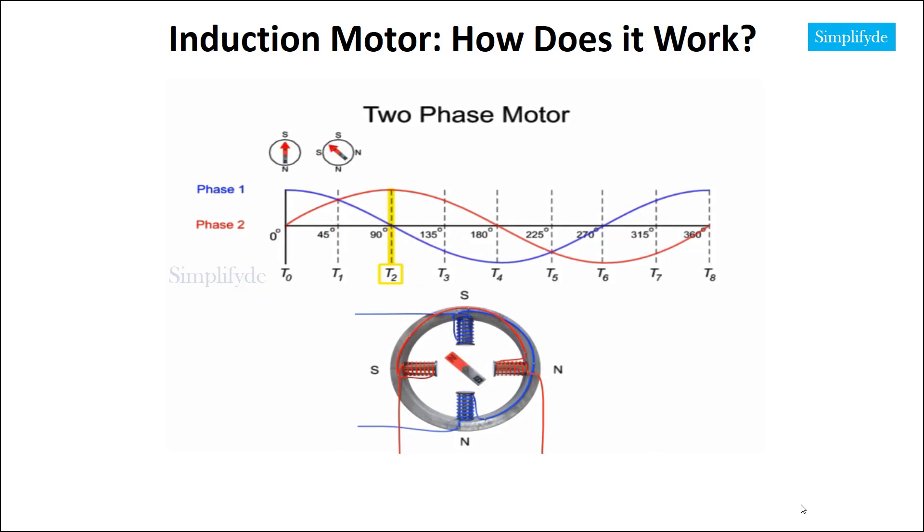At time 2, phase 1 reaches zero current flow, while phase 2 reaches maximum current flow. This causes the rotor to turn 45 degrees counter-clockwise to align itself with the horizontal poles.